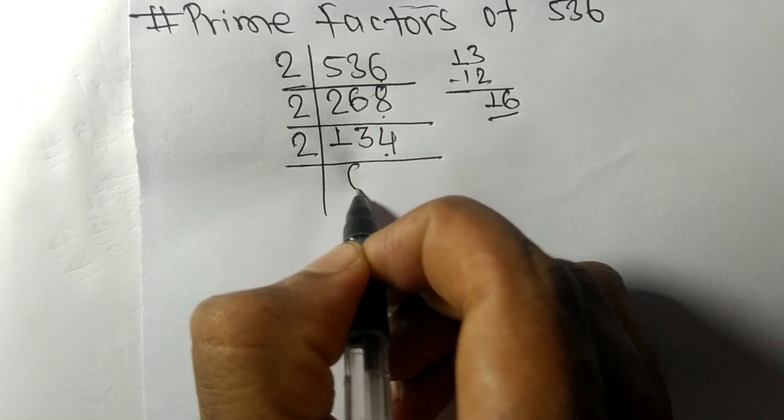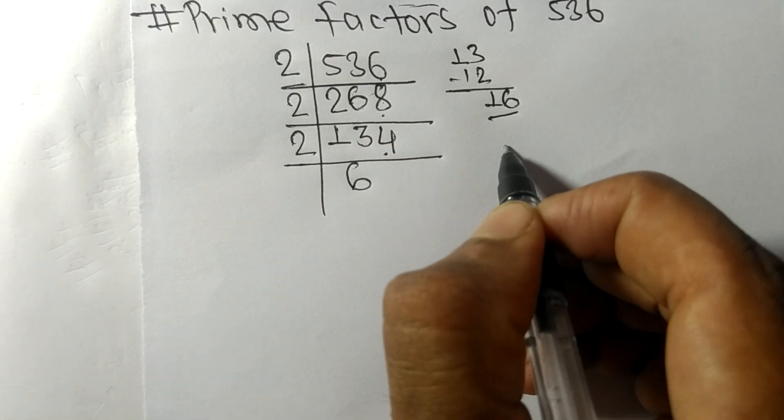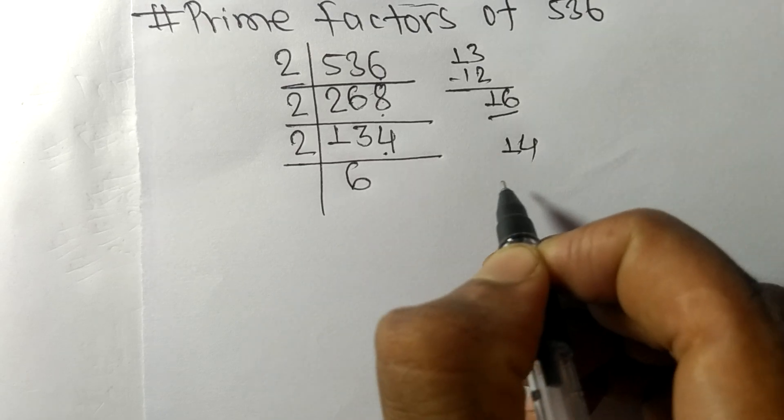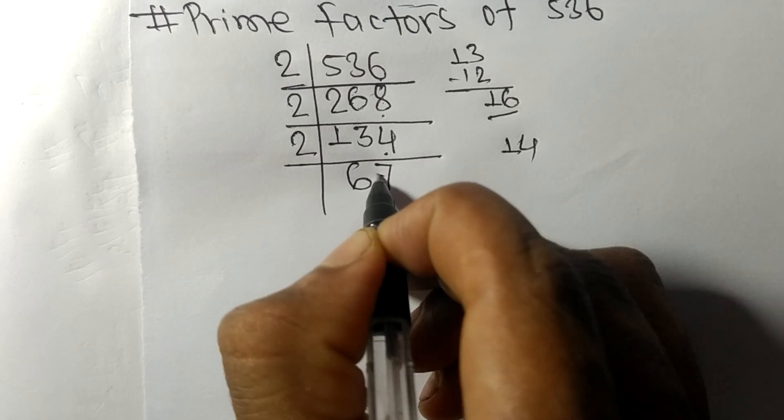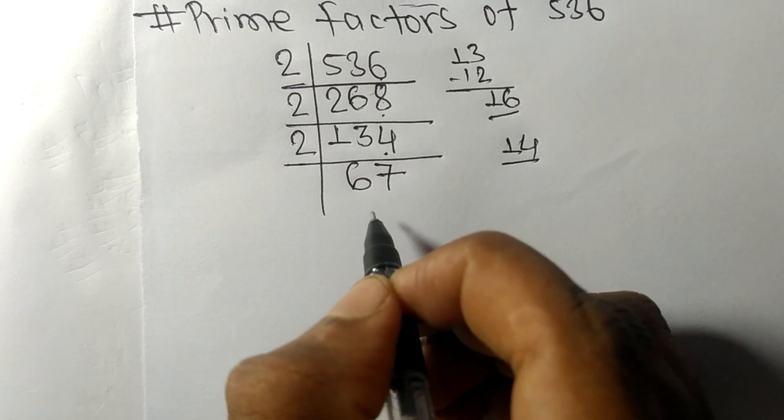Again we have an even number 2 at the end, so it is divisible by 2. 2 times 6 is 12, remainder 1. Bring down the 4, that's 14. 2 times 7 is 14.